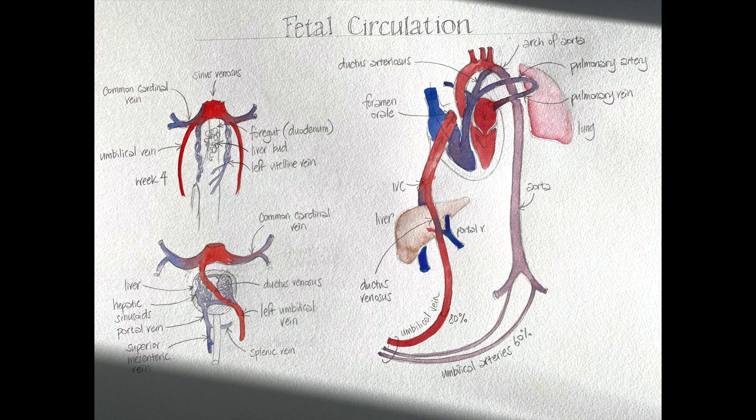There are all these clues in adult anatomy pointing to this extraordinary fetal circulation, which allows the fetus to get its oxygen from the placenta with a single circulation, yet be set up so that at the moment of birth it can switch to a double circulation. At some point I will do another video about the arch arteries and what they all develop into, but I think that's enough for now. Thank you for watching — please like, share, and subscribe to my YouTube channel so you get notifications of new videos.